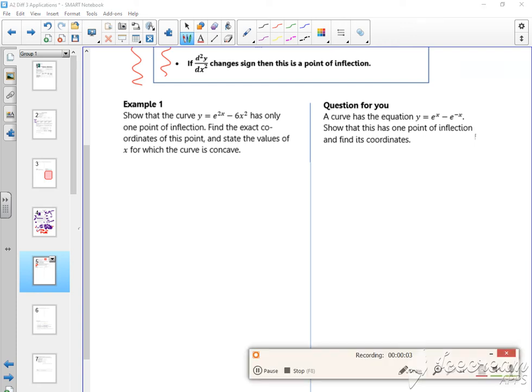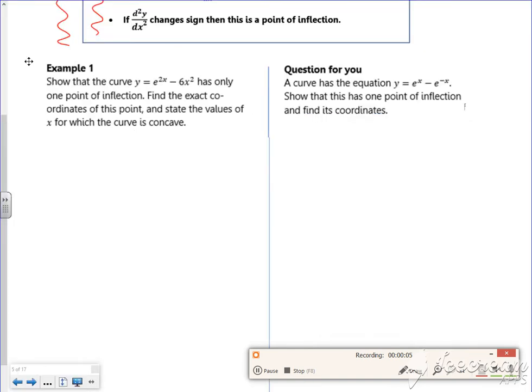So this is video 7000 because I'm on 5 million videos. Right, so it says show that the curve has only one point of inflection and find the coordinates.